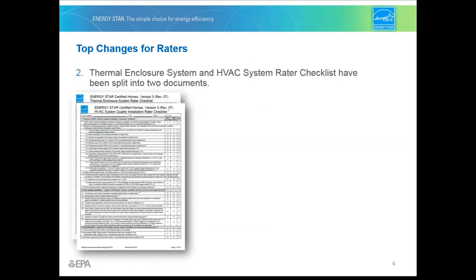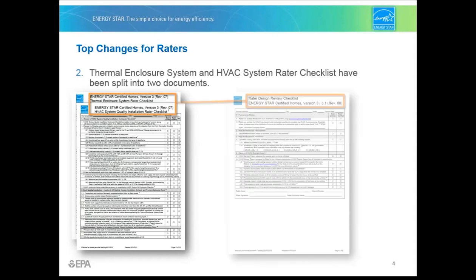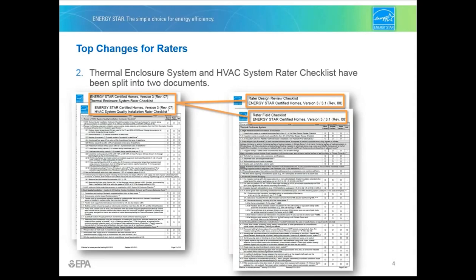Second, let's talk about the rater inspection checklist. The thermal enclosure system and HVAC system rater checklists have been split into two documents. The rater design review checklist contains all of the items the rater can complete at the design stage — it's just half a page. The rater field checklist contains all of the items to be completed in the field, and is one page front and back.